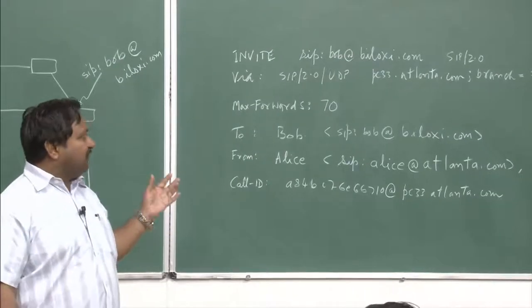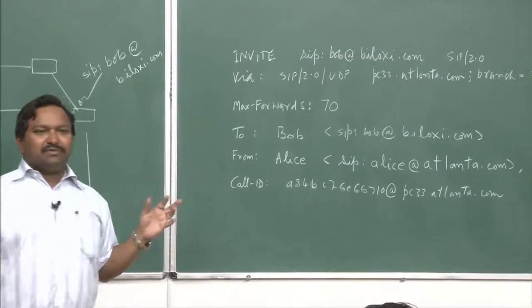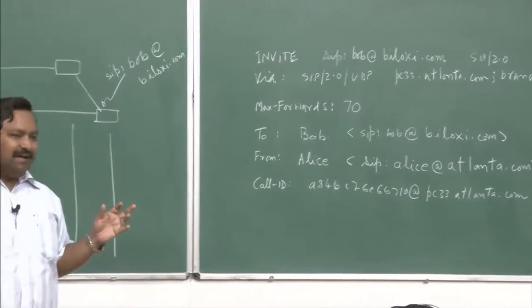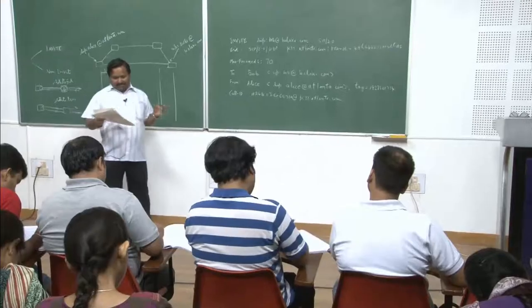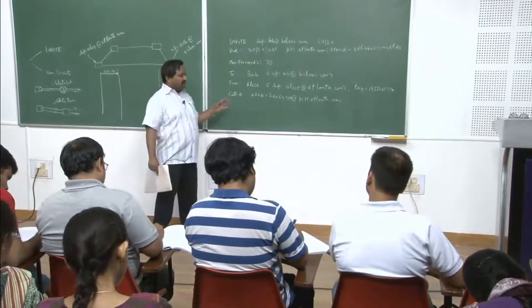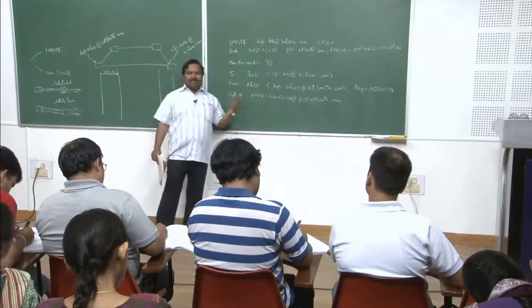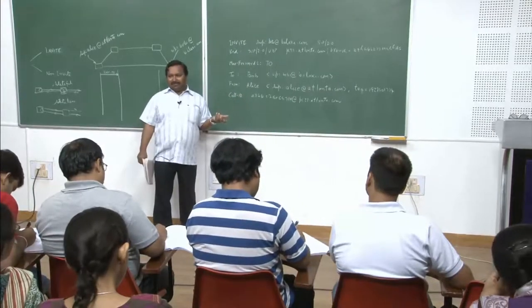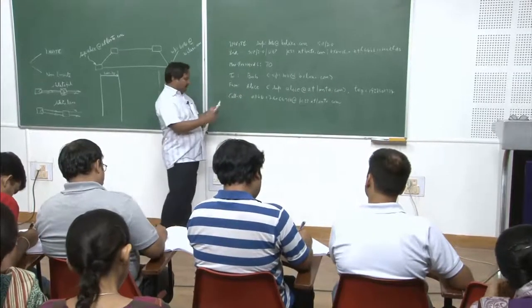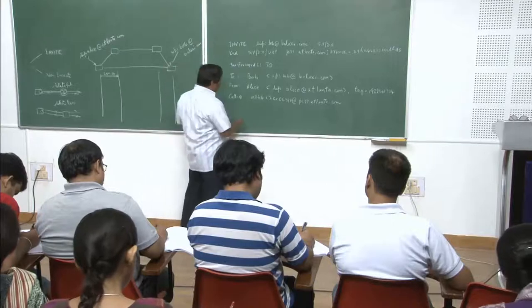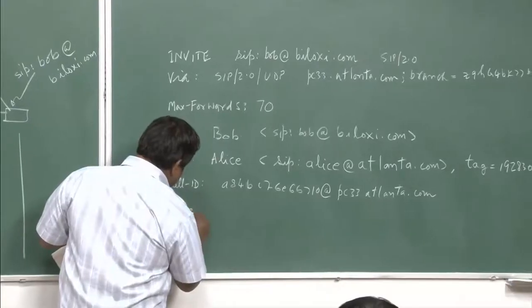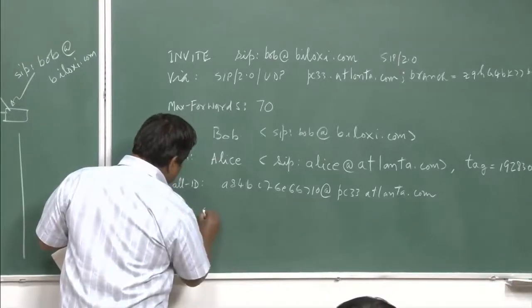All three random numbers put together identify something known as a dialogue. In earlier RFC SIP 1.0, this was called a call leg — but now we call it a dialogue. Then of course there is the CSeq — the command sequence number.